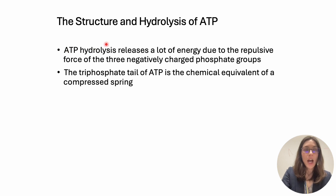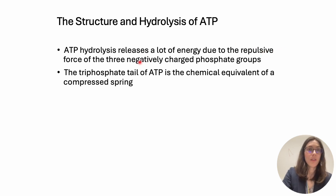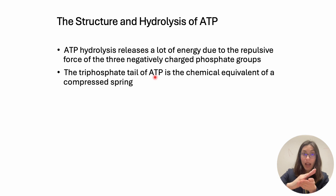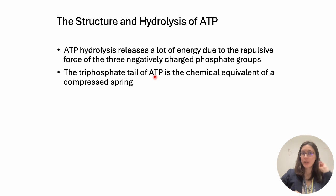ATP hydrolysis — ATP being broken down into ADP and phosphate — releases a lot of energy because the bond that we just broke was really weak. There was a lot of repulsive forces between the three negatively charged phosphate groups, and therefore it was really quick to break it down and release that energy. We think of the triphosphate tail of ATP, those three phosphates, as like a compressed spring that can then repulse and spring, releasing that phosphate.